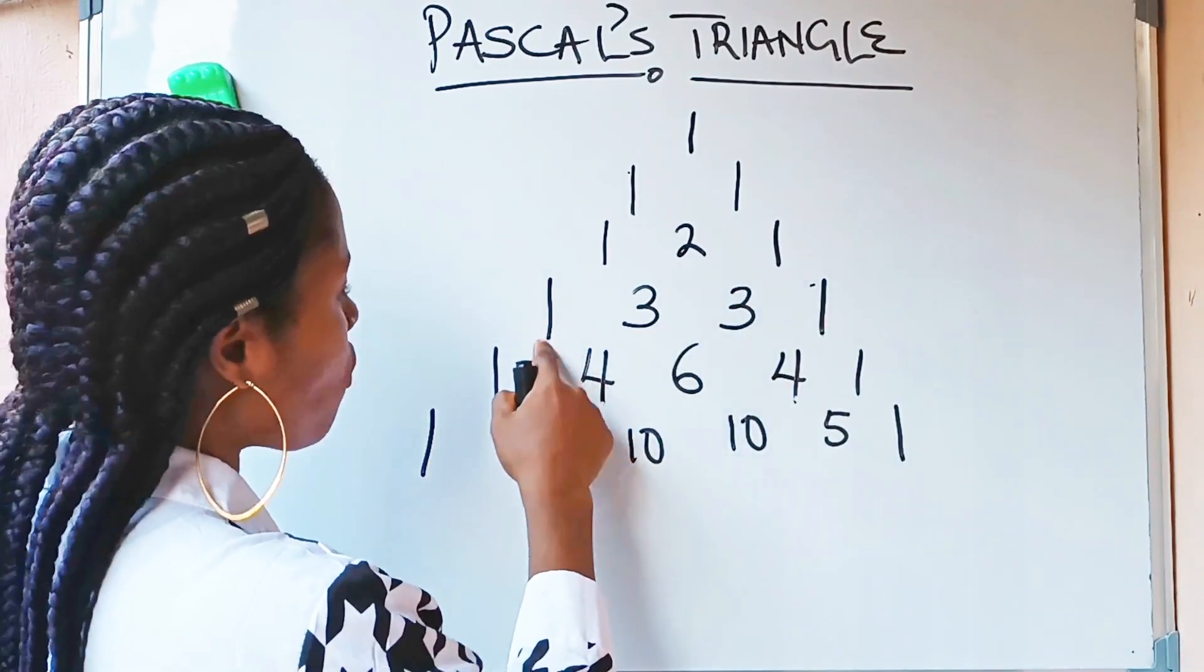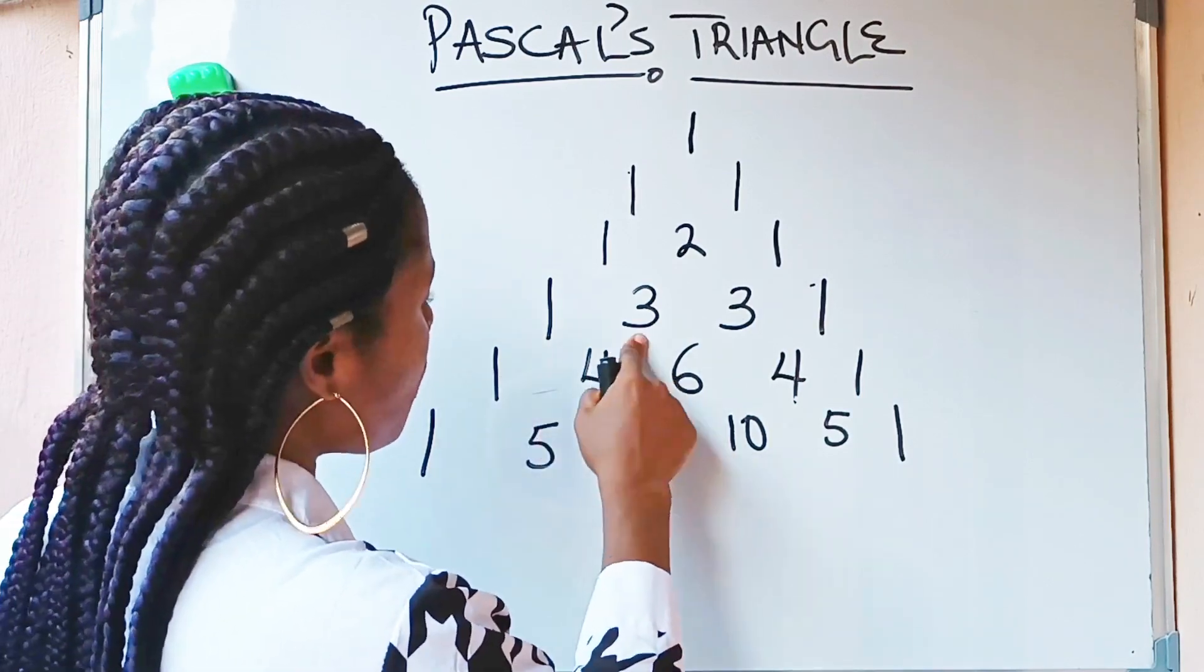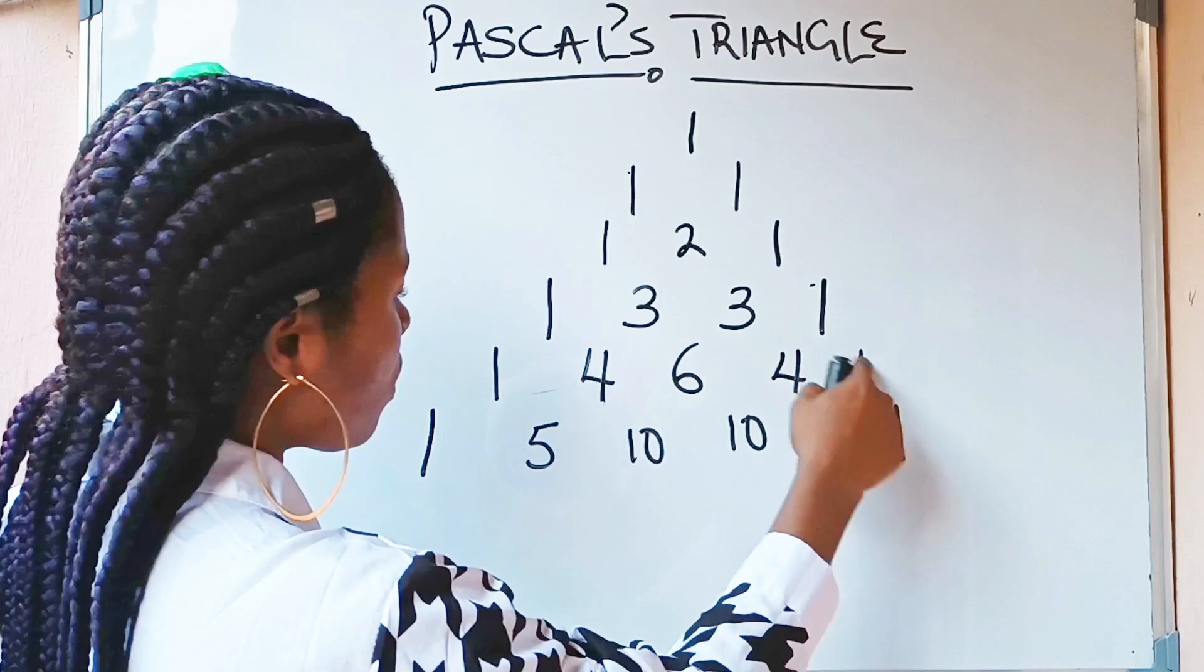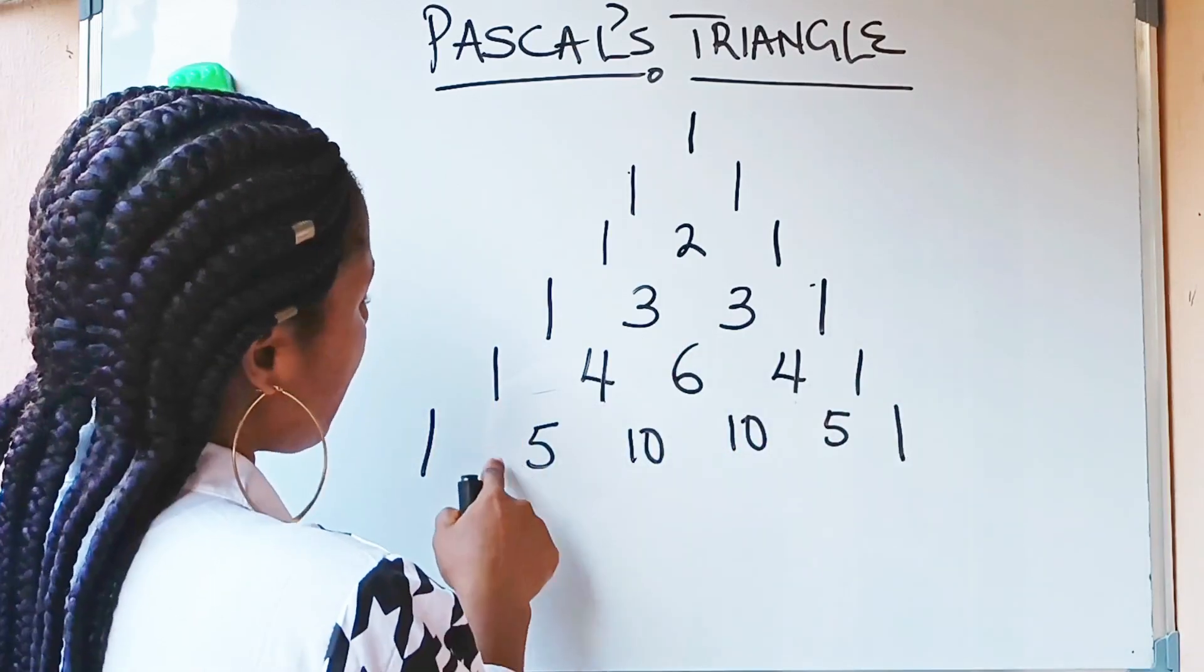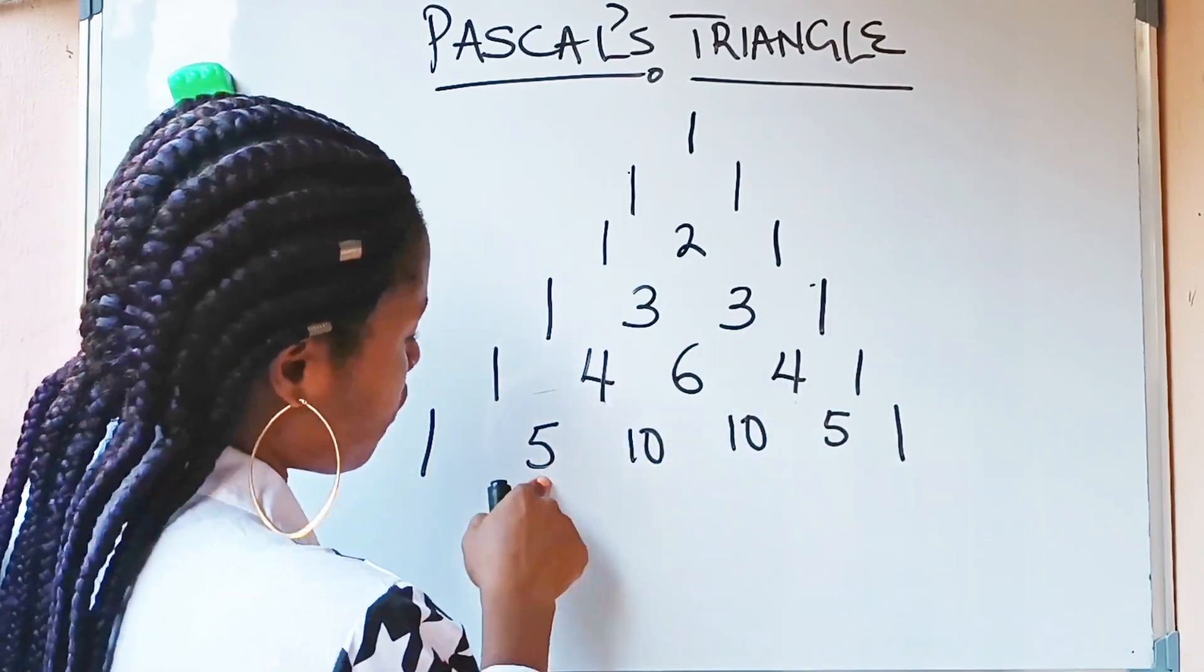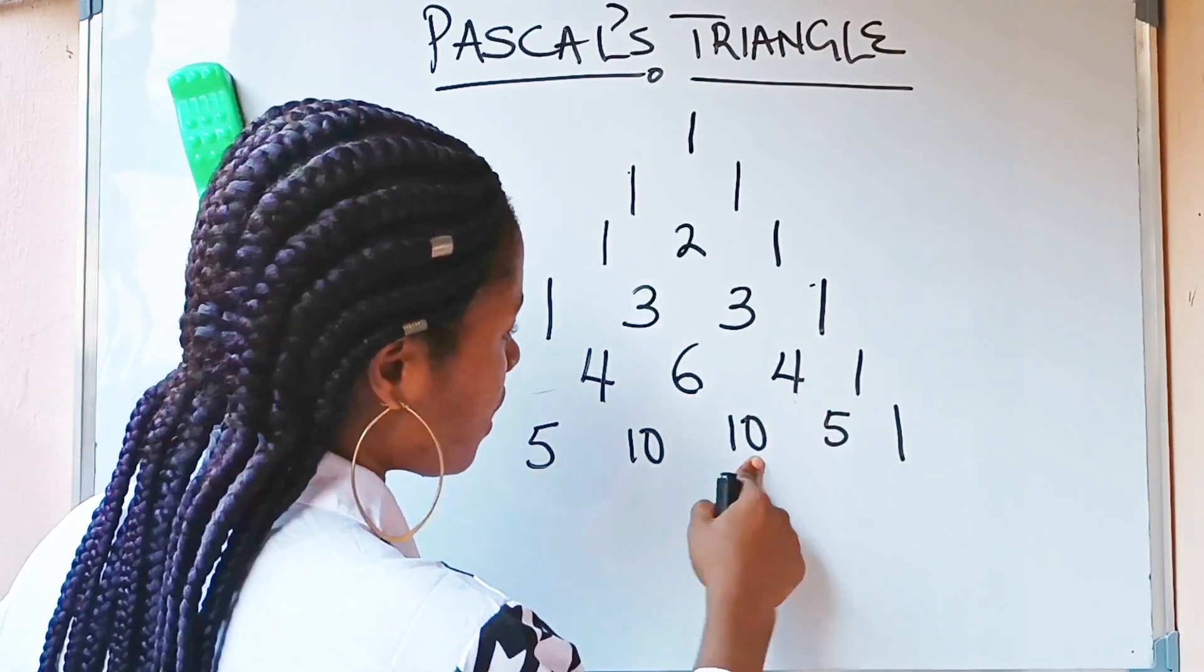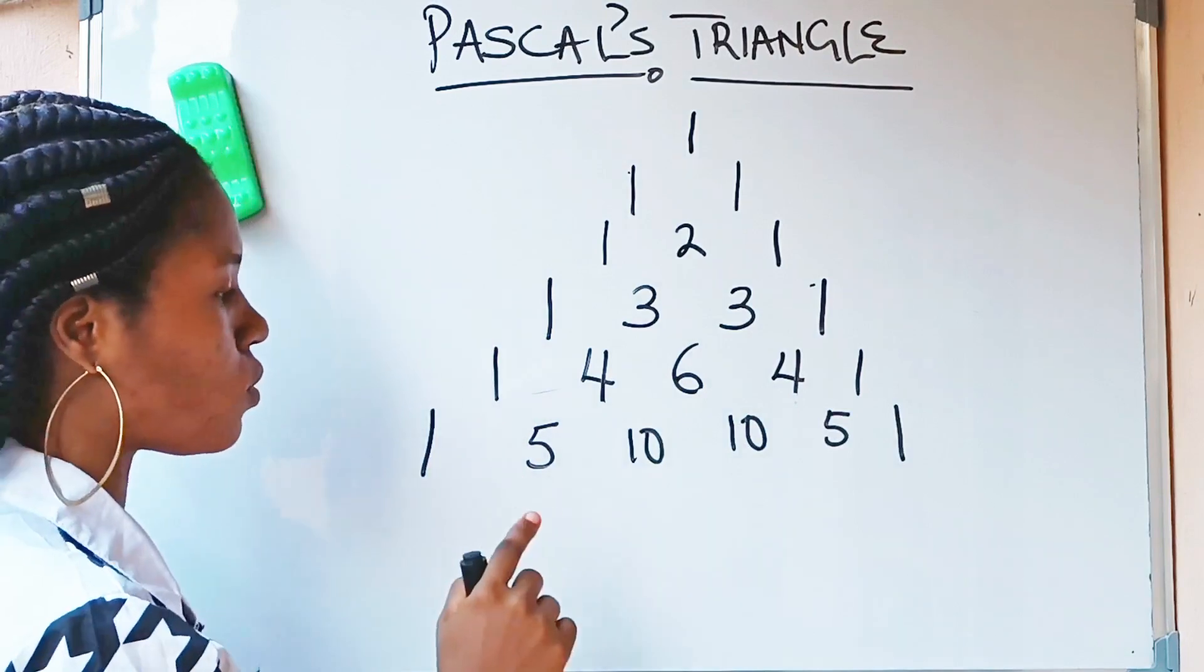Then, coming to this row now. I have 1 plus 3 gave me 4. 3 plus 3 gave me 6. 3 plus 1 gave me 4. And I added 1 and 1 to complete it. Then, coming to this one. 1 plus 4 gave me 5. 4 plus 6 gave me 10. 6 plus 4 gave me 10. 4 plus 1 gave me 5. I completed it with 1 and 1.